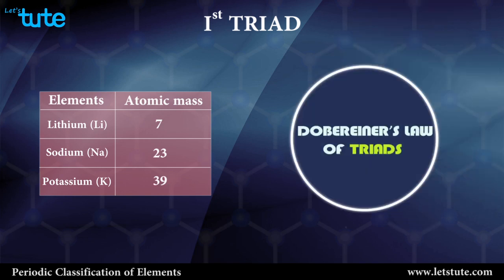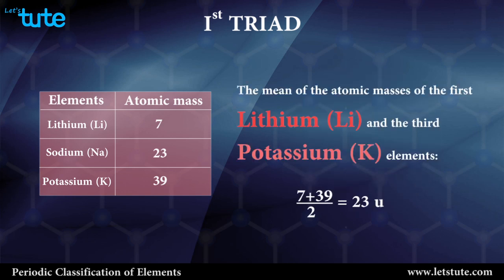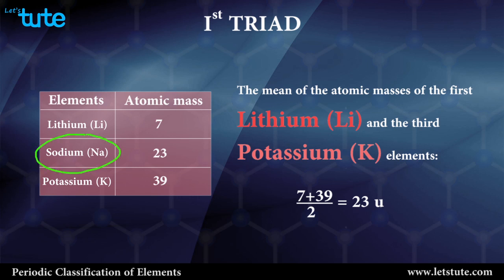By applying Dobereiner's law of triads, we get the mean of the atomic masses of the first and third elements — that is lithium and potassium — to be (7 + 39) / 2, which equals 23. As you can see, the atomic mass of the middle element, sodium, is also 23. Thus we can say Dobereiner's law of triads is applicable to the first triad.